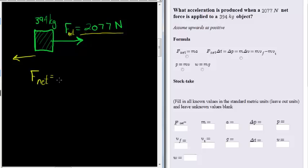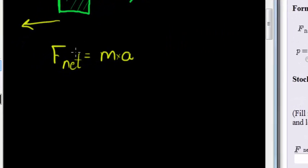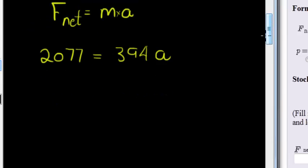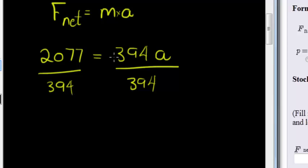Now we know the net force is 2077, the mass is 394, and we have to calculate the acceleration. So simply dividing both sides by 394.